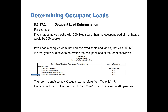If you had a banquet room that had non-fixed seats and tables that was 300 metres squared in area, you would have to determine the occupant load of the room as follows. You would first go to Table 3.1.17.1 and look up assembly, because a banquet room is an assembly occupancy. You look up space with non-fixed seats and tables, and you get a value of 0.95 metres squared per person. You would then calculate the occupant load using the room area of 300 metres squared divided by 0.95 metres squared per person.